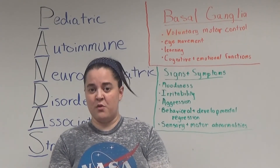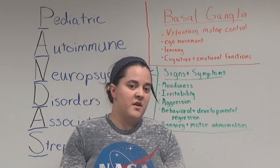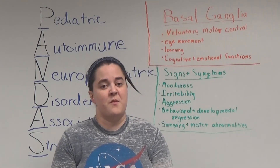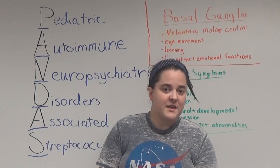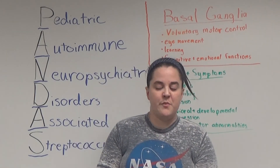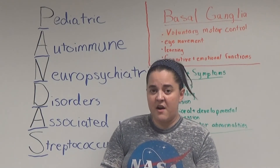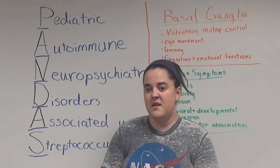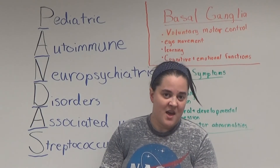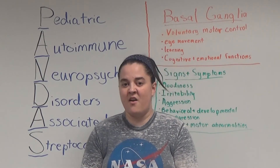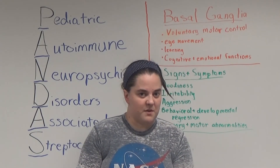Testing for PANDAS involves a throat swab and blood work to check for the presence of Streptococcus. Once that is confirmed, the patient can be given antibiotics, therapy, cognitive and behavioral therapy, and sometimes SSRIs are also included to help control the OCD symptoms.